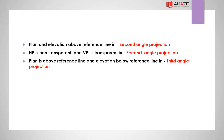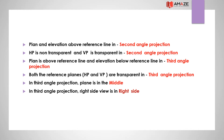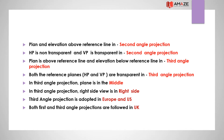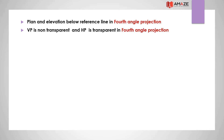In third angle projection, the plan is above the reference line and the elevation is below the reference line. Both HP and VP are transparent. The right side view appears on the right side. Third angle projection is adopted in Europe and the US, and both first and third angle projections are followed in the UK. In fourth angle projection, both the plan and elevation are below the reference plane. The vertical plane is non-transparent and the horizontal plane is transparent.